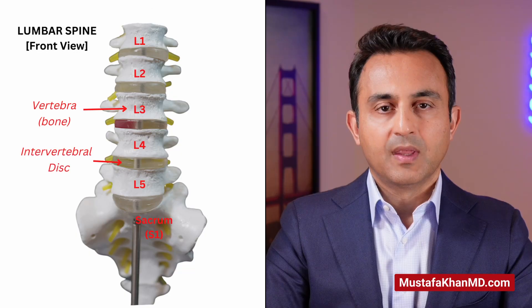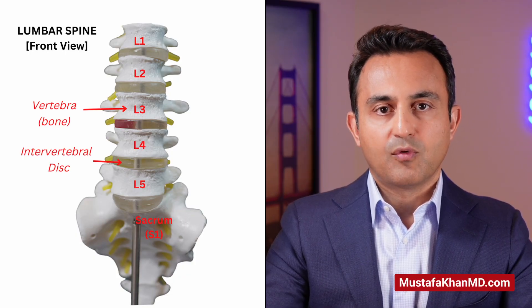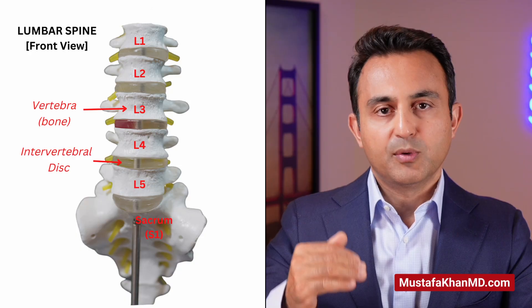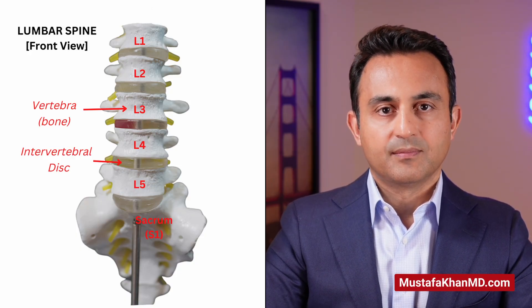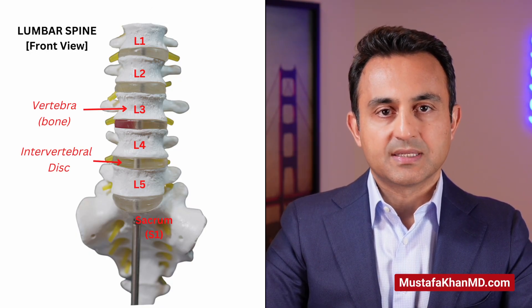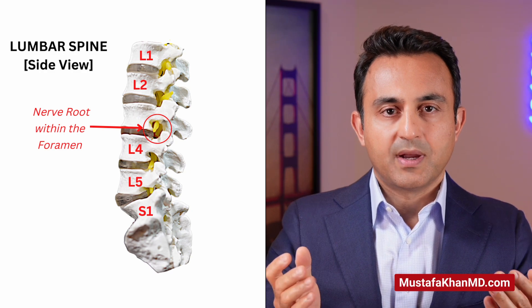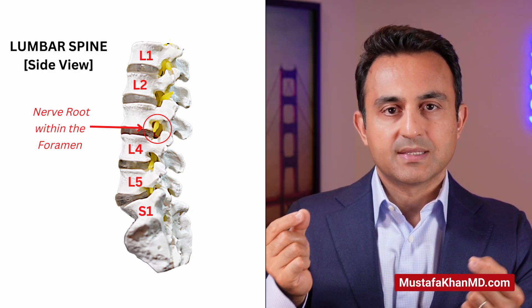So, what causes lumbar radiculopathy? In order to answer this question, let's take a look at the anatomy of the lower back or the lumbar spine. The lumbar spine consists of five lumbar vertebrae, numbered L1, 2, 3, 4, and 5. Below these vertebrae is the first sacral vertebra, known as S1. Between these bones there are soft cushions known as the intervertebral discs. On the outside of the lumbar spine, there are tiny openings between any two vertebrae, known as the foramen.